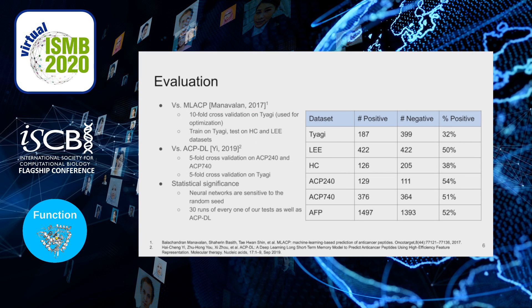To evaluate our model, we compared it to both MLACP and ACPDL. When comparing with MLACP, we first performed tenfold cross-validation on the Tiagi dataset, which was used for optimization for both MLACP models and our own model. Then, we trained on the Tiagi dataset and tested with both the HC and LEE datasets. With ACPDL, we performed five-fold cross-validation on both ACP240 and ACP740 to mimic their process as closely as possible. We were also able to perform five-fold cross-validation on Tiagi, which is something they did not do in their original paper, but we were able to do because we had access to their code.